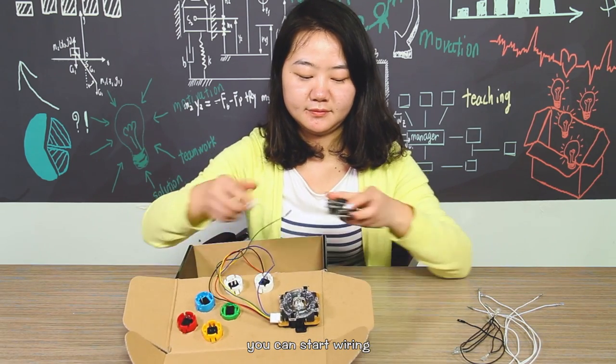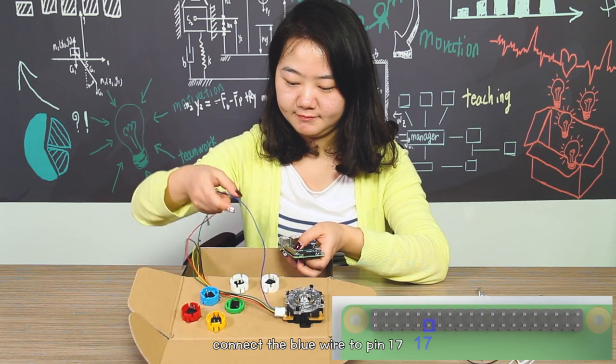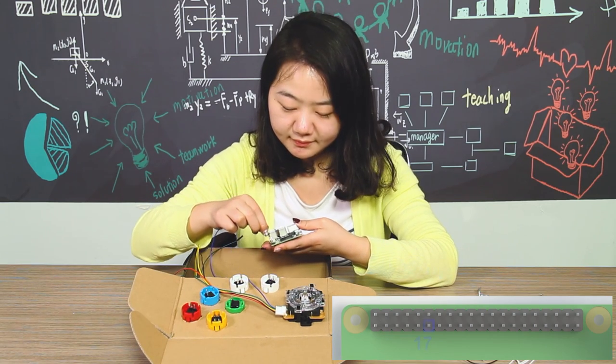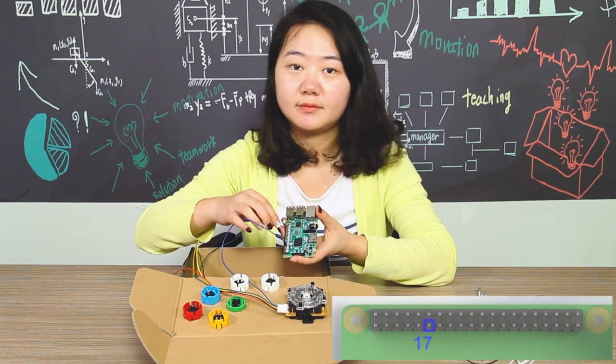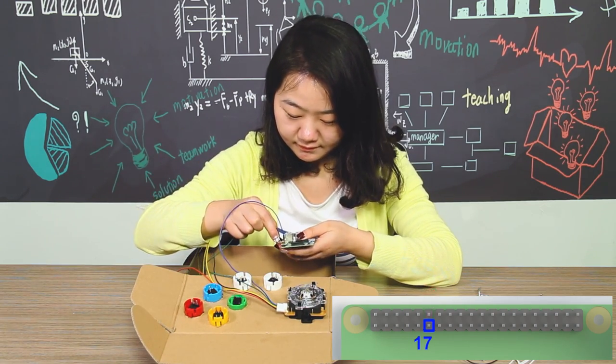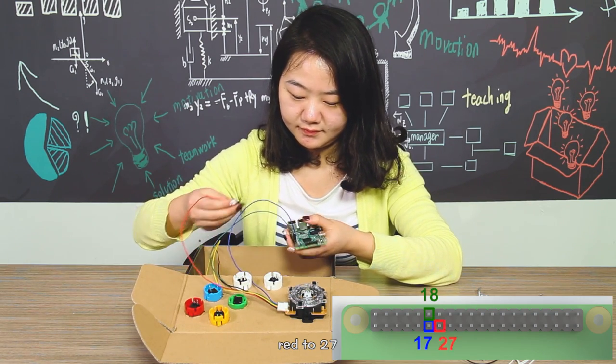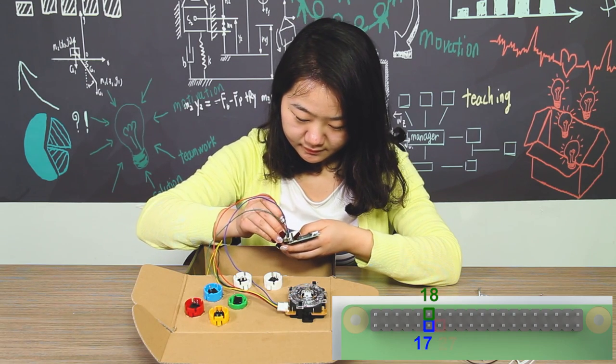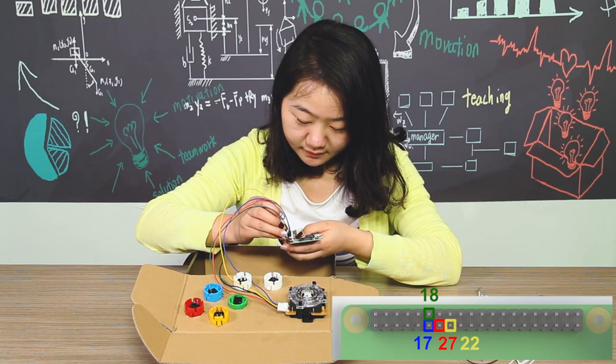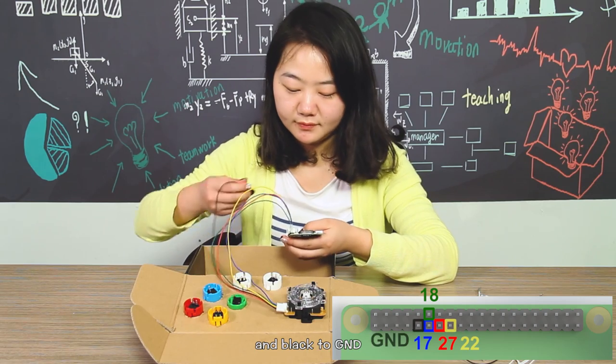You can start wiring according to the instruction booklet. Connect the blue wire to pin 17, red to 18, green to 27, yellow to 22, and black to GND.